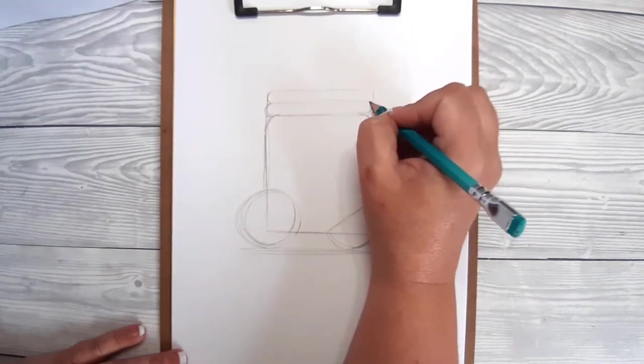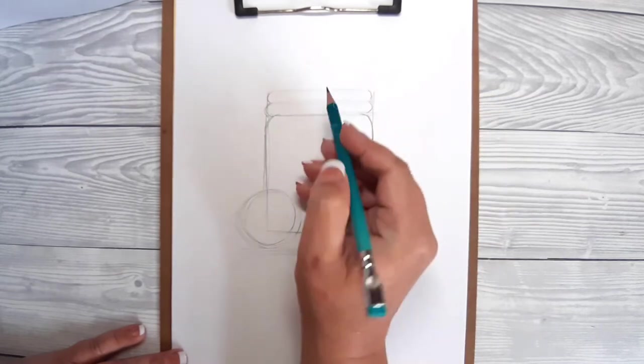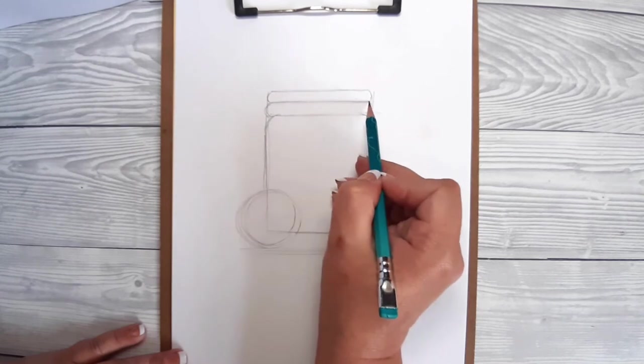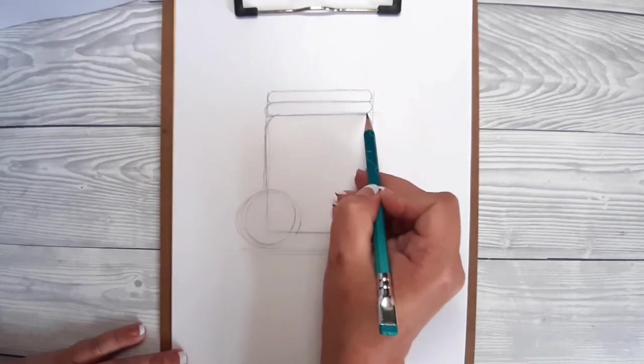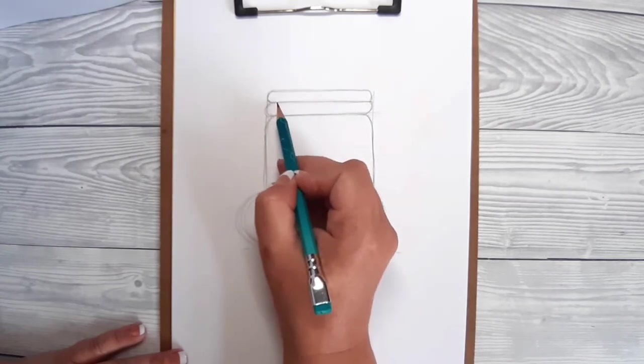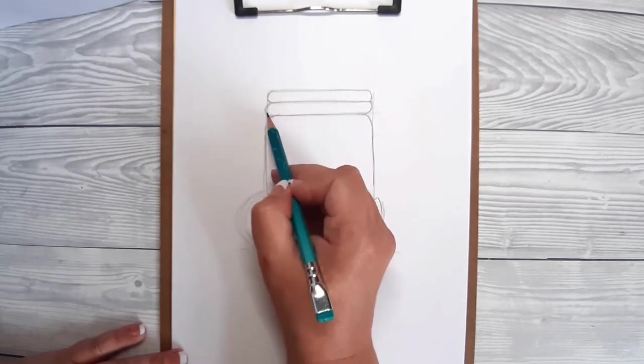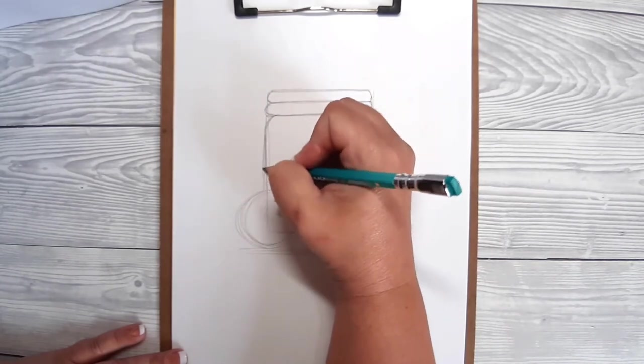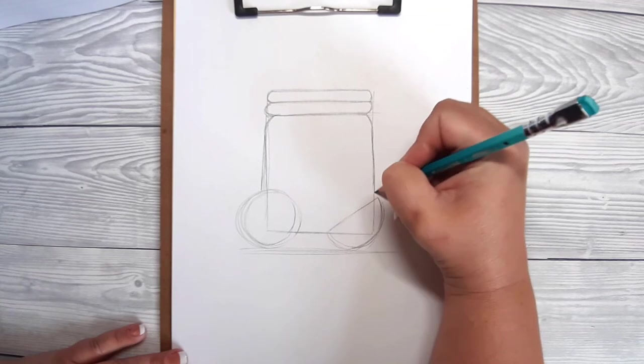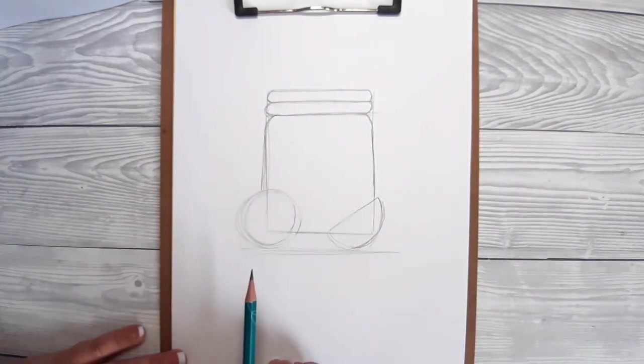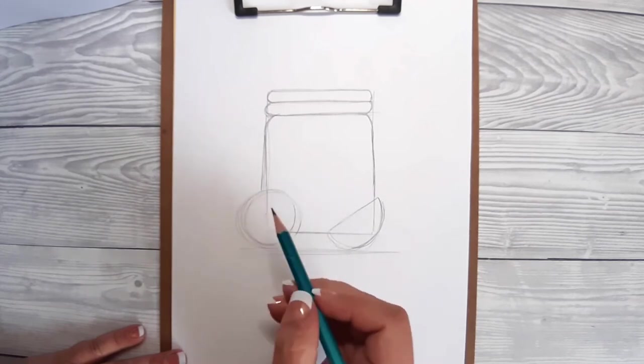Now please keep in mind that my pencil lines are a lot heavier than what yours should be. I'm drawing them quite thick and quite dark so that you can see what I'm doing, which will cause problems when I try to erase them when I go on to do the line art. But if you keep your lines nice and soft and very light, it'll work much better when you go to erase them or line over them.